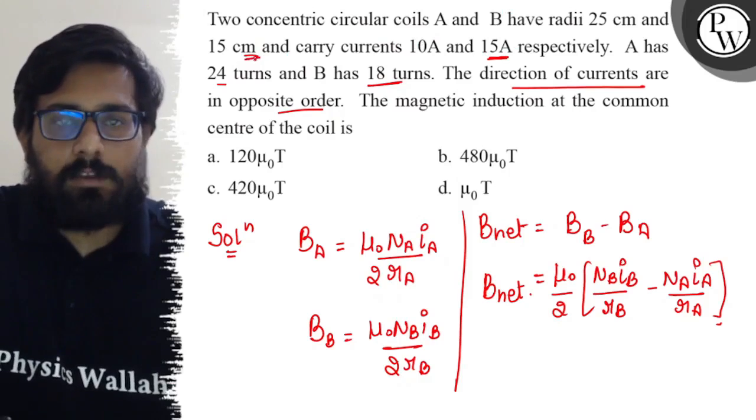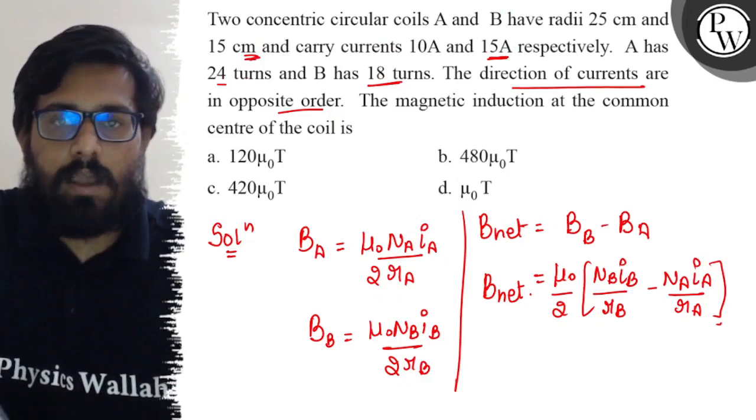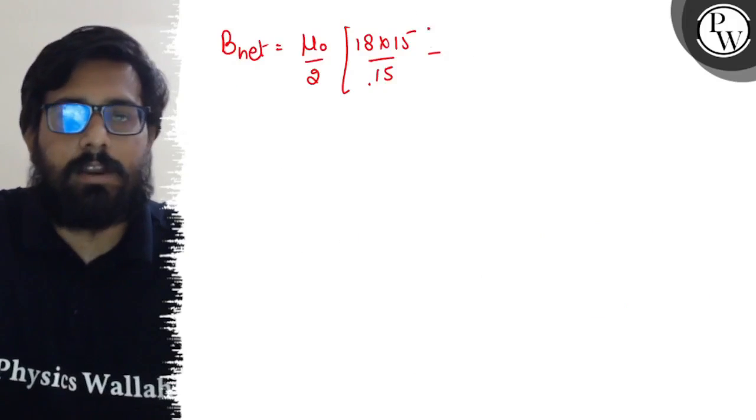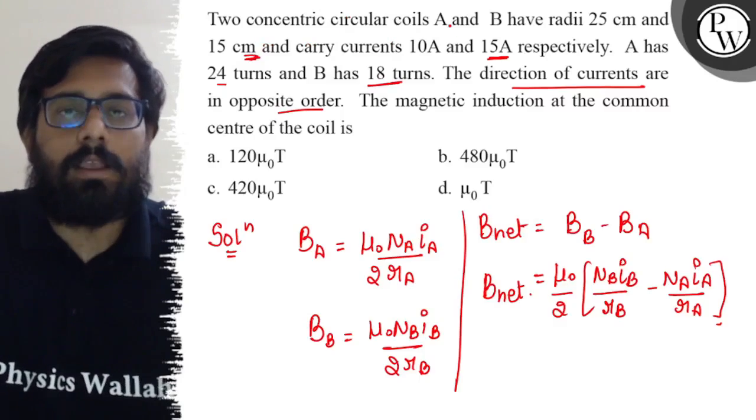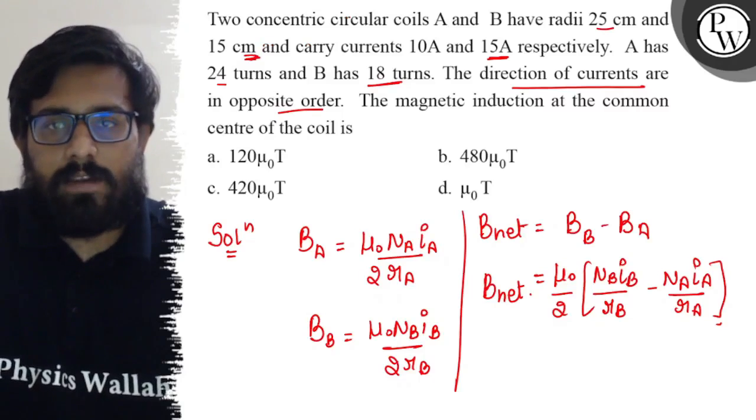This part is in centimeters, so you have to convert it into meters. This can be written as times 100 minus... Now for A, radius is 25 centimeters.